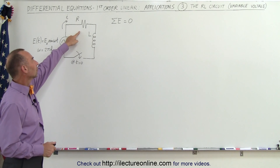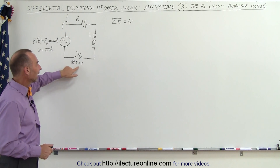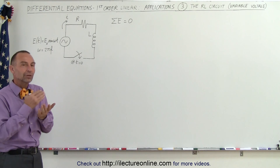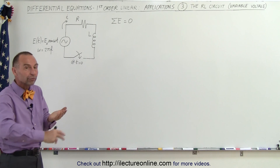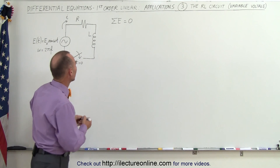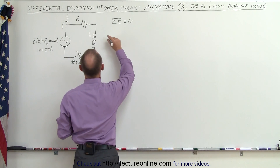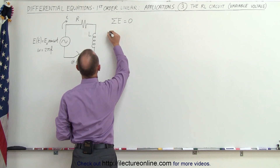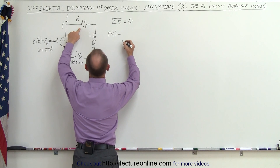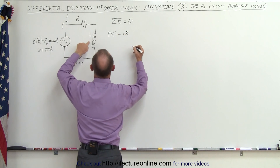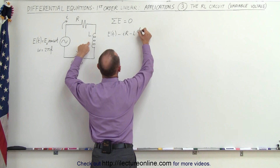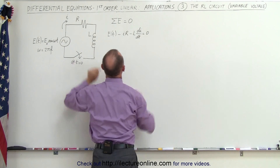We still have an inductor, we still have a resistor, and we still close the switch at time equals zero. We're going to use Kirchhoff's rules to find the current in the circuit by summing up all the voltages around the circuit, which should add up to zero. We have a voltage rise E as a function of time, minus the voltage drop across the resistor, which is I times R, minus the voltage dropped across the inductor, which is L times di/dt, and that equals zero.